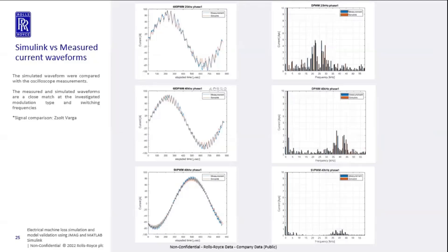A comparison between the Simulink simulation and the measurement: the blue lines are the measured current waveforms and the orange lines are the Simulink-generated waveforms. You can see those waveforms are a pretty close match, which means we can use this environment with high confidence during our design phase.